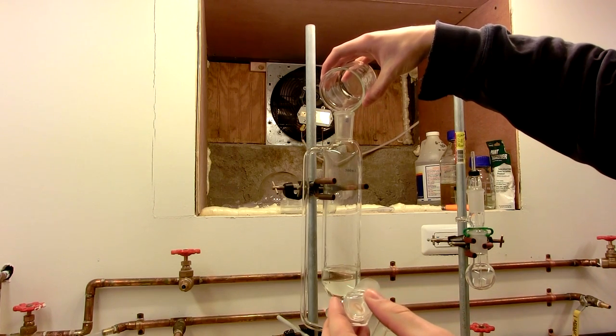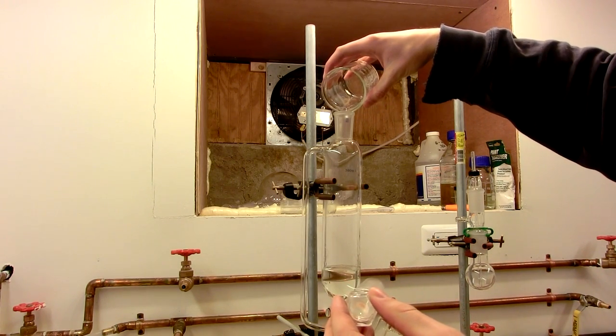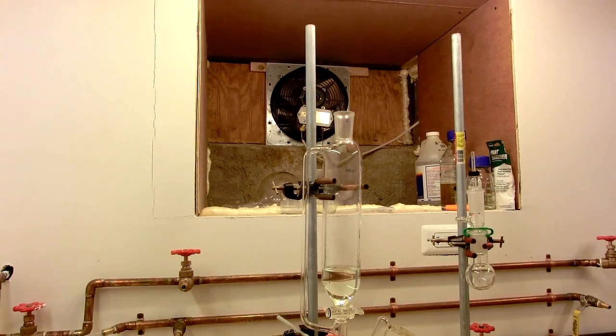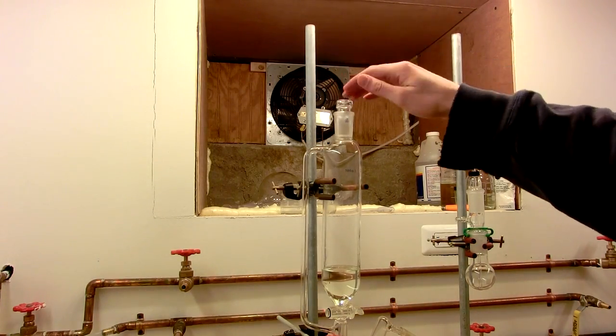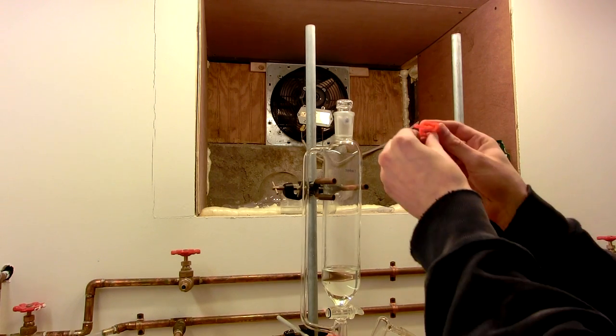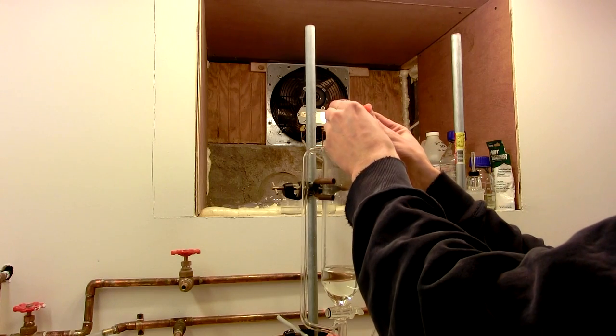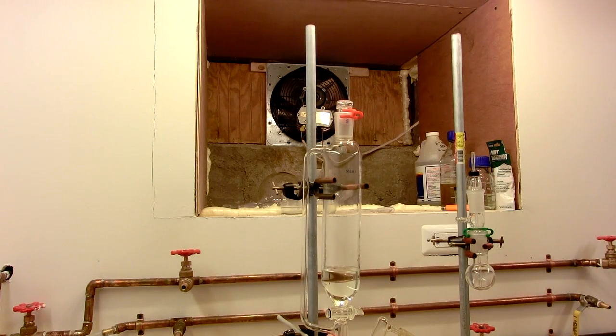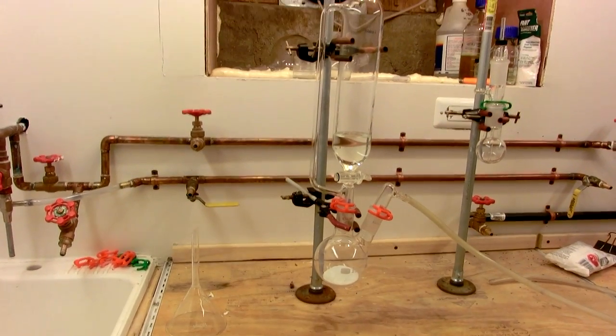You can see it's fuming in the water vapor that's in there. There we go. And insert the stopper. And because this apparatus will be pressurized, we also need to secure this with a clip. Perfect. Chlorine generator is now set up.